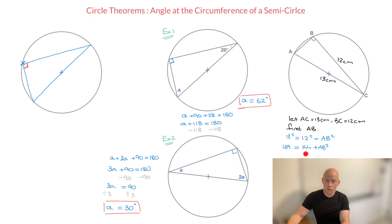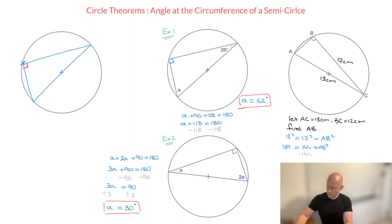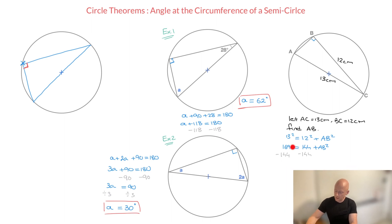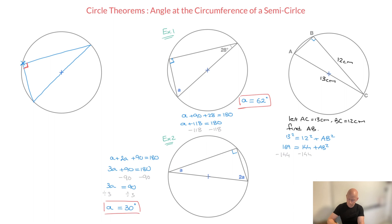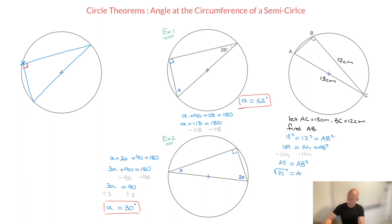Next, I get rid of this 144 on the right-hand side by subtracting it from both sides. The left-hand side becomes 169 minus 144, which is 25, and that equals AB squared. Finally, since AB squared equals 25, we apply the square root to both sides: the square root of 25 equals AB. In other words, AB equals 5 centimeters. And there we go — we now know about the circle theorem involving the angle at the circumference of a semicircle, and that's it for this tutorial.